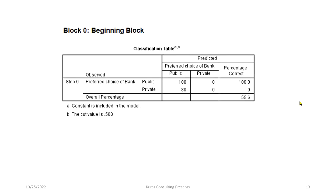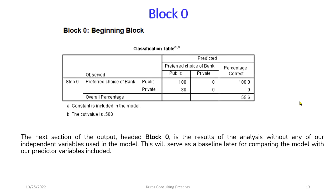The next output is Block 0. This section, headed as Block 0, is the result of the analysis without any independent variables included in the model. It serves as a baseline for later comparison with our full model.